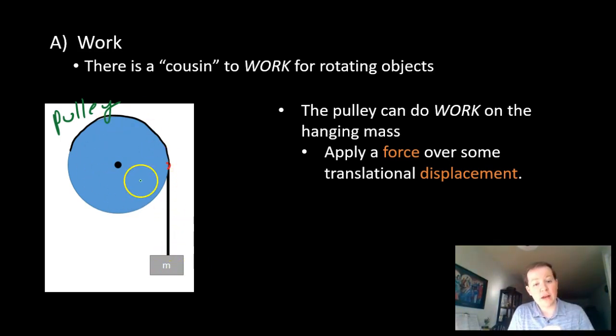What's that going to do to this hanging mass? Hopefully I don't need an animation to show you, but it's going to make this mass start moving up. It's going to wind up that string and it's going to apply a force on this mass. The string is attached to the pulley, the string is also attached to the mass, and there's going to be a force acting on this mass. Is that mass going to travel some displacement, some vertical change in position? Absolutely. So this pulley, my first couple bullet points here, the pulley is able to do work on the hanging mass.